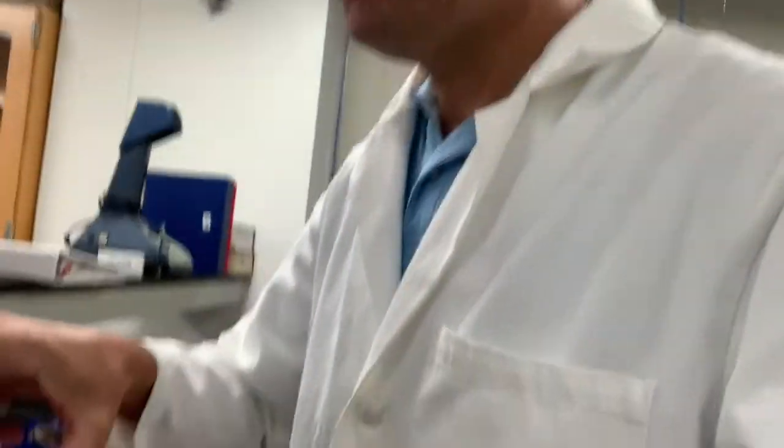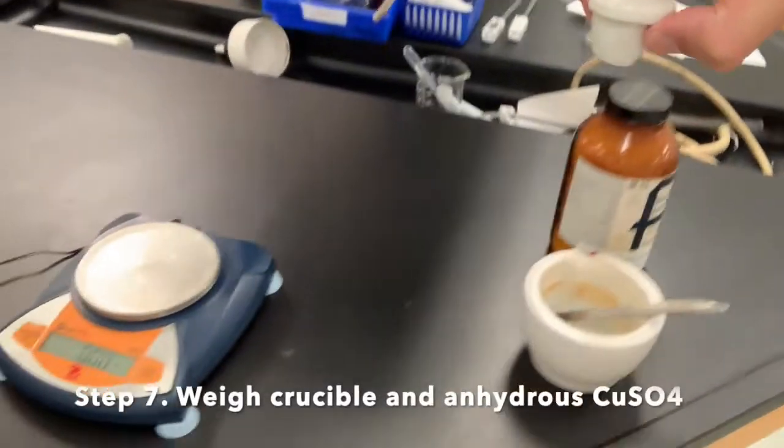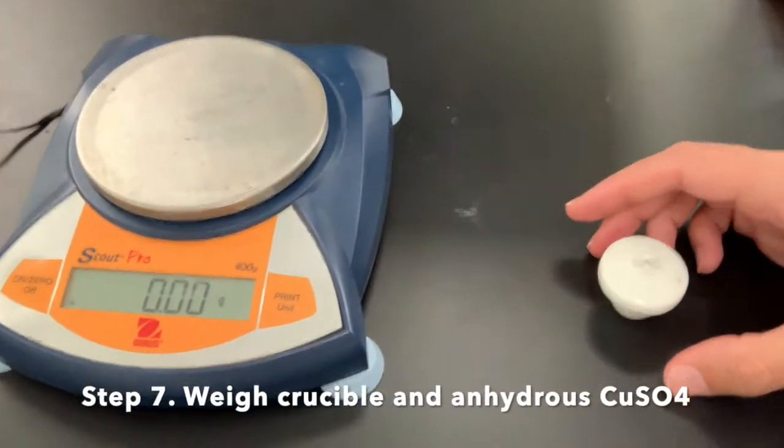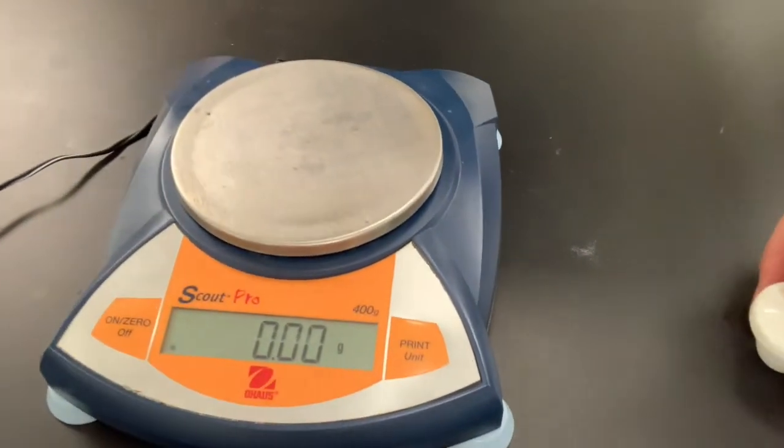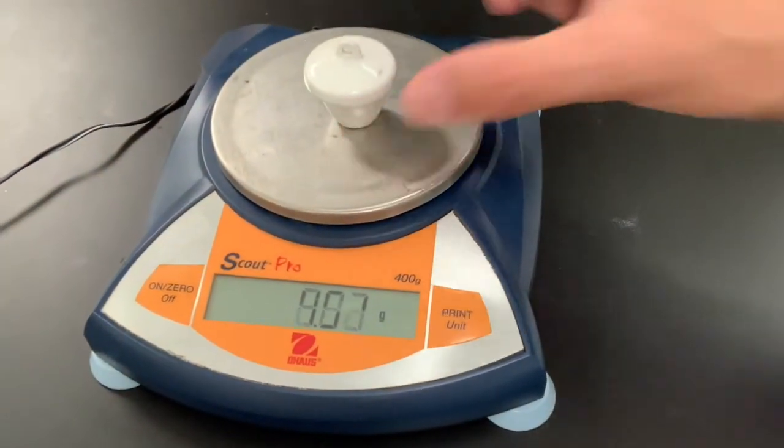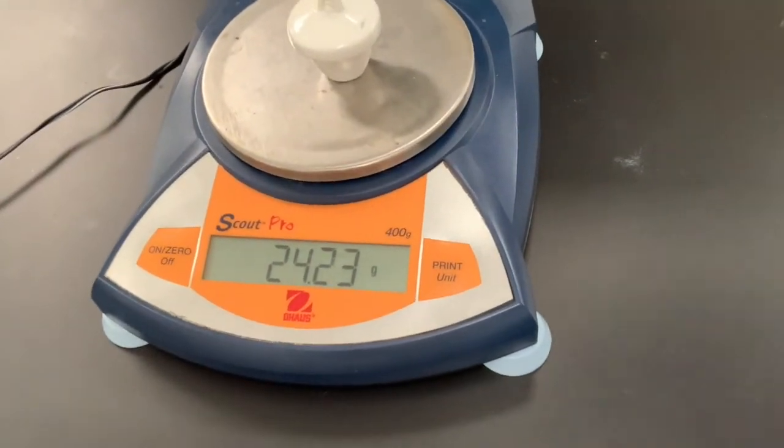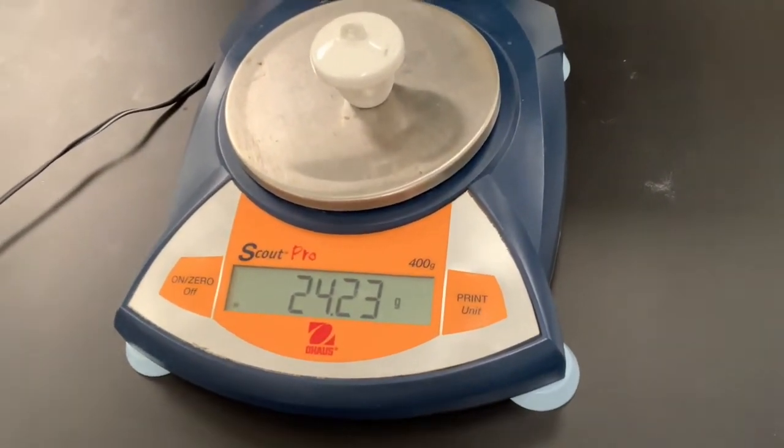We've been cooling this crucible for about 10 minutes and it's cool to the touch now. We'll come over here to the balance and we'll weigh it. Your balance should read zero. If not, hit the zero or the tare button. And we'll go ahead and put that on there and take a reading there. And that's it. We're done with the lab. I'll take you through the calculations now.